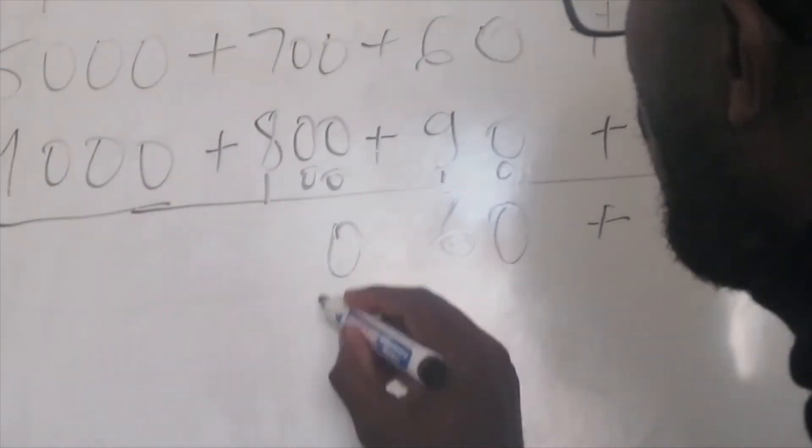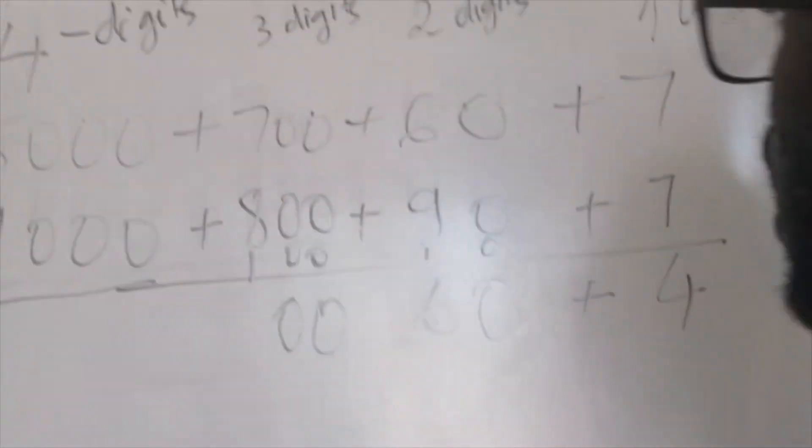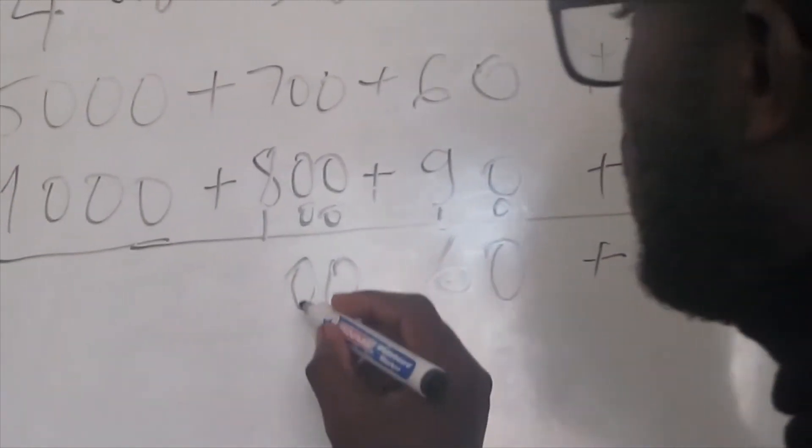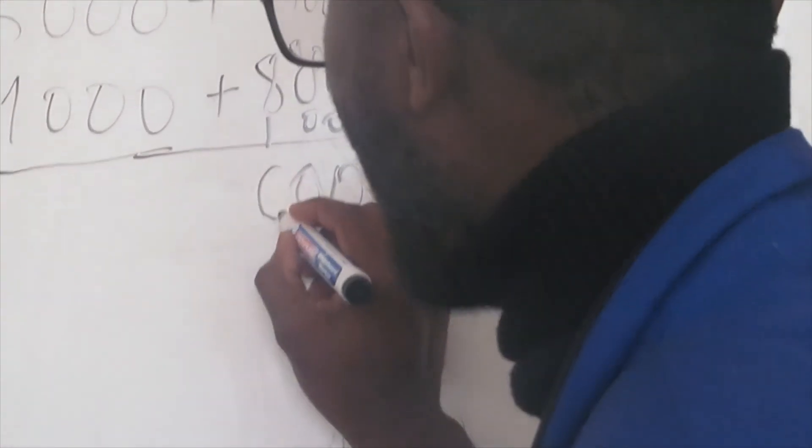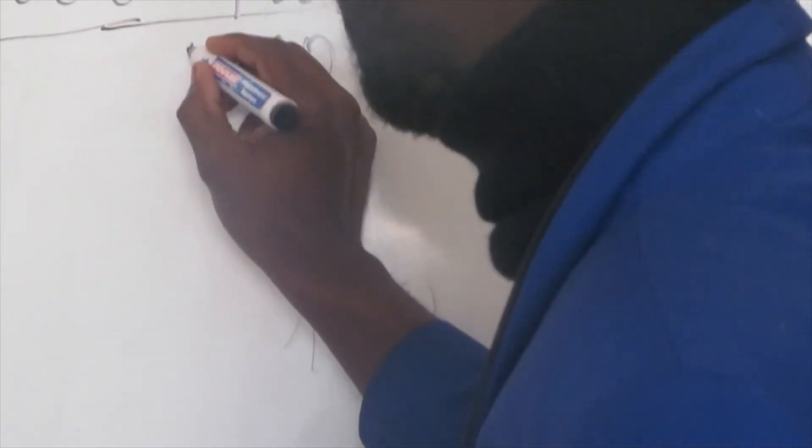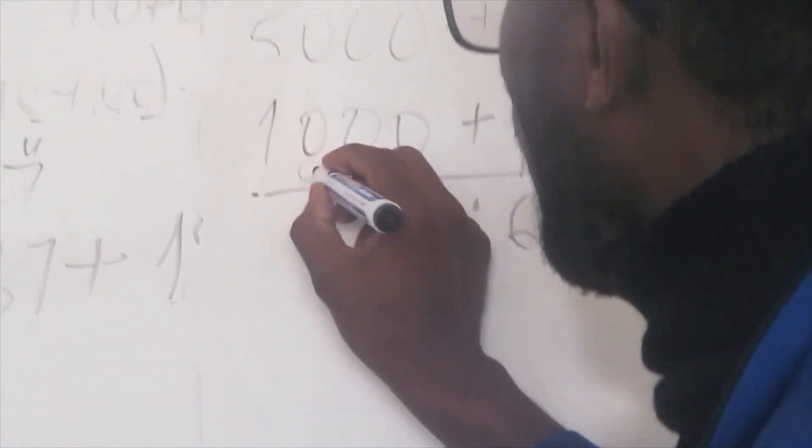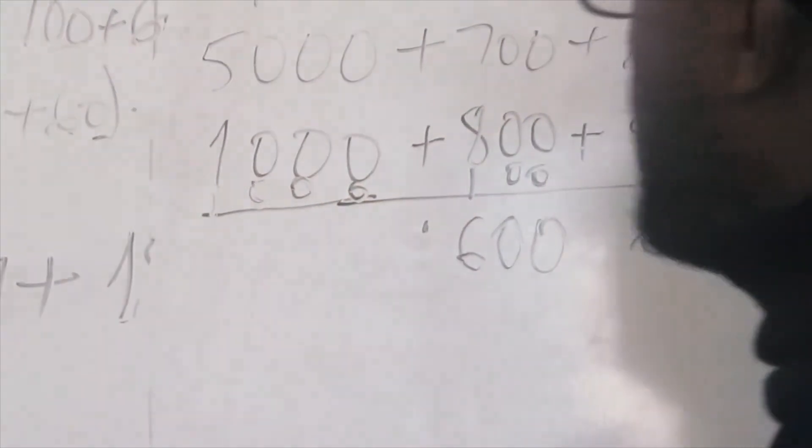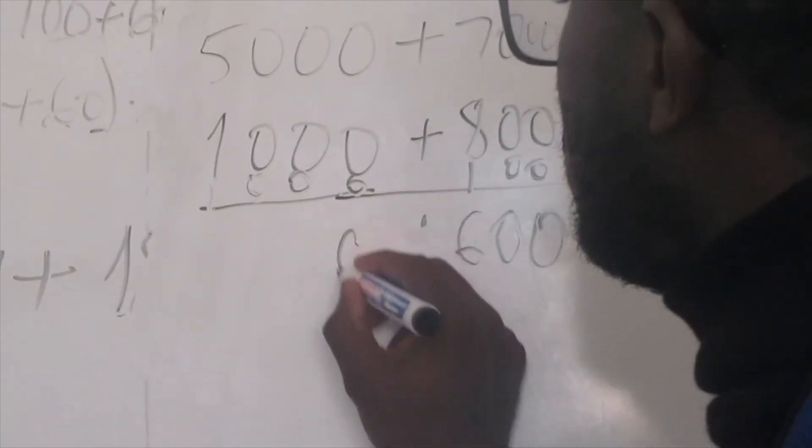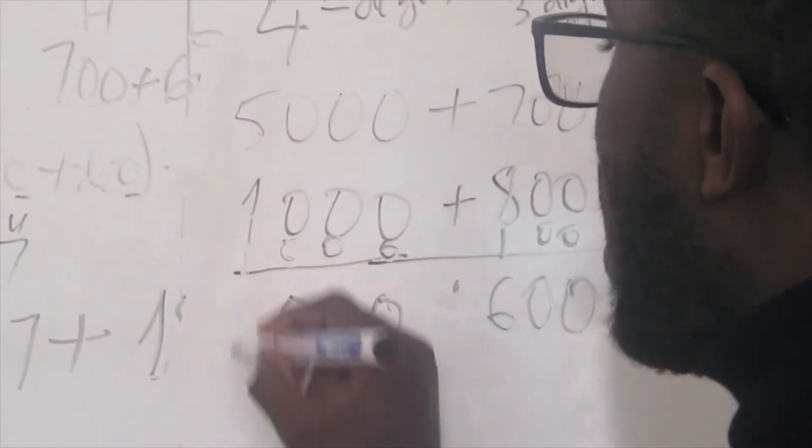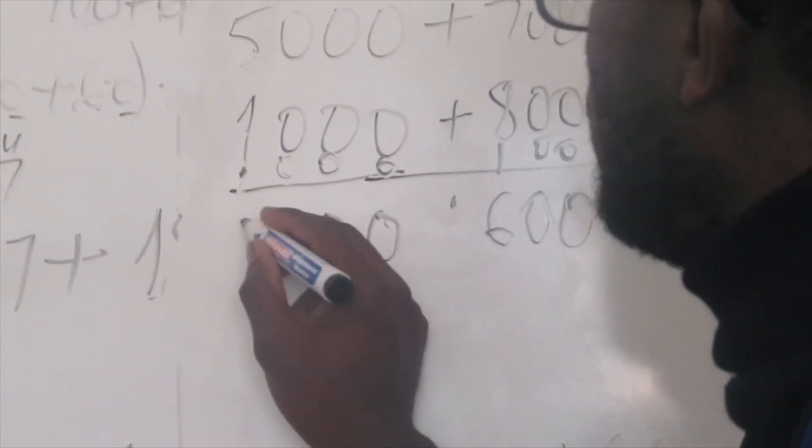700 plus 800 is 1,500, plus 100 is 1,600. This one here is thousands, so it's going to go to this side. 5,000 plus 1,000 is 6,000, plus this one here is 7,000.